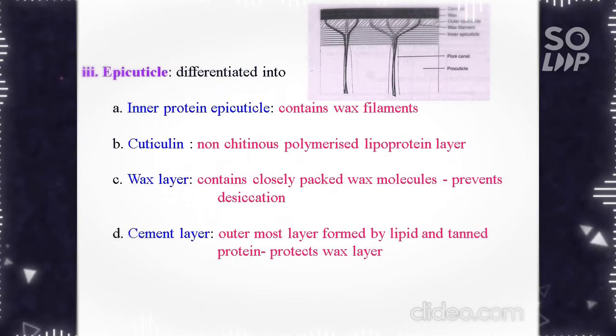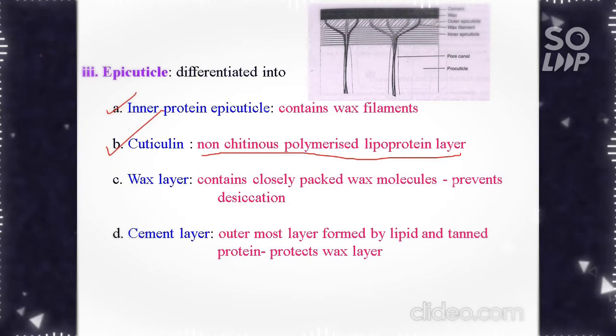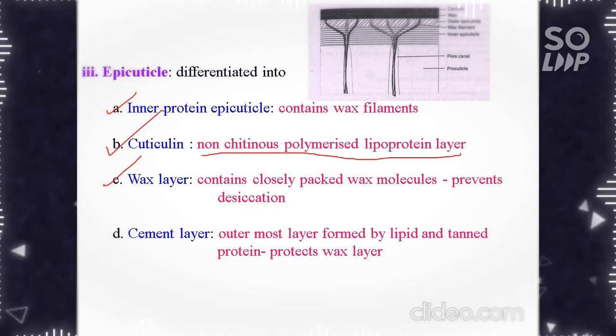The epicuticle is the outermost layer and is very thin. It is differentiated into four layers: first is inner epicuticle which contains wax filaments, second is cuticulin which is a non-chitinous polymerized lipoprotein layer, and then the wax layer which contains closely packed wax molecules that prevent desiccation.